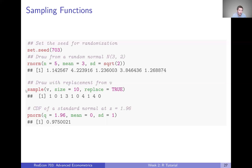If we have a vector — remember we created that V vector that was zero through four — we can ask R to randomly sample from that vector. In this case, we're asking it to sample from that vector 10 times with replacement, so we get a random draw of 10 numbers from zero through four. There are also things like calculating the CDF of a standard normal at a given Z value using pnorm. Similar P-functions exist for the t-distribution and other distributions. We can ask R to give us the CDF of the normal distribution at a Z stat of 1.96.